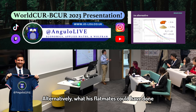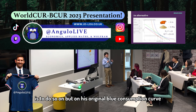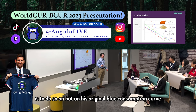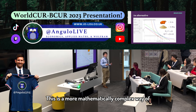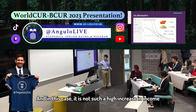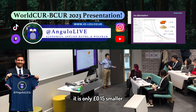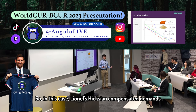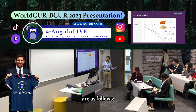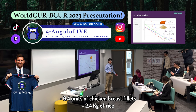Alternatively, what his flatmates could have done instead of compensating him on his original purchasing power is to compensate him on his original blue consumption curve. This is a more mathematically complex way of compensating income, but it is also valid. And in this case, it's not such a high income increase — it is only £0.15 smaller. So, in this case, Lionel's Hicksian compensated demands are: 6.4 units of chicken breast and 2.4 kilograms of rice.